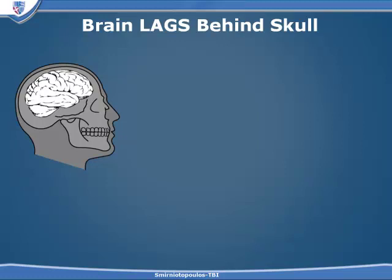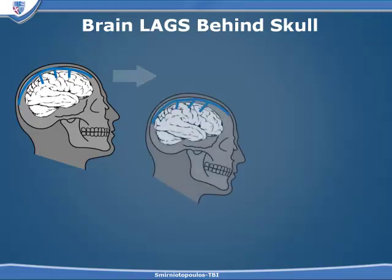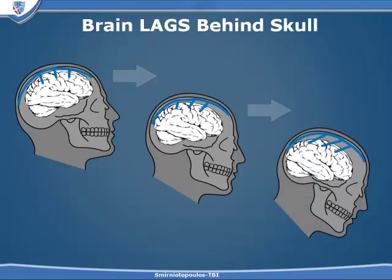The bridging veins connect the cerebral hemisphere to the superior sagittal sinus. Because the brain is floating, the brain movement may lag behind the movement of the skull. If we move the skull very rapidly with an acceleration or deceleration, the movement of the brain lags behind, and as the brain lags behind, those bridging veins become stretched. The bridging veins are most likely to tear at the point where they insert into the superior sagittal sinus. Typically it's not one vein but multiple veins that tear, and it may be veins on both sides of the midline, so the patient may have bilateral subdural hematomas.